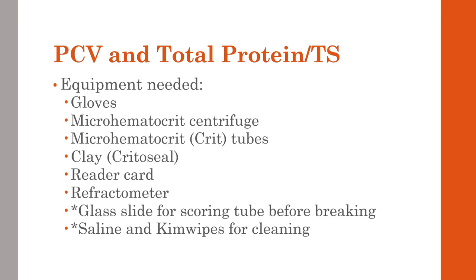For equipment, we need our gloves, a micro-hematocrit centrifuge, crit tubes or micro-hematocrit tubes, the clay — which is a brand name called Critoseal — a reader card, a refractometer, and glass slides for scoring the tube before we break it. We also need saline and Kim wipes for cleaning up the refractometer at the end.